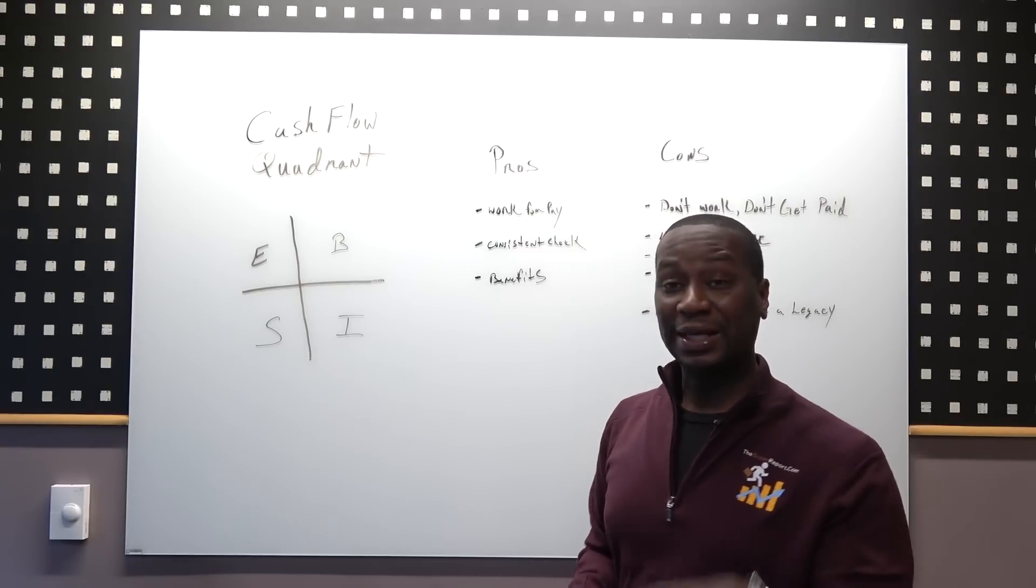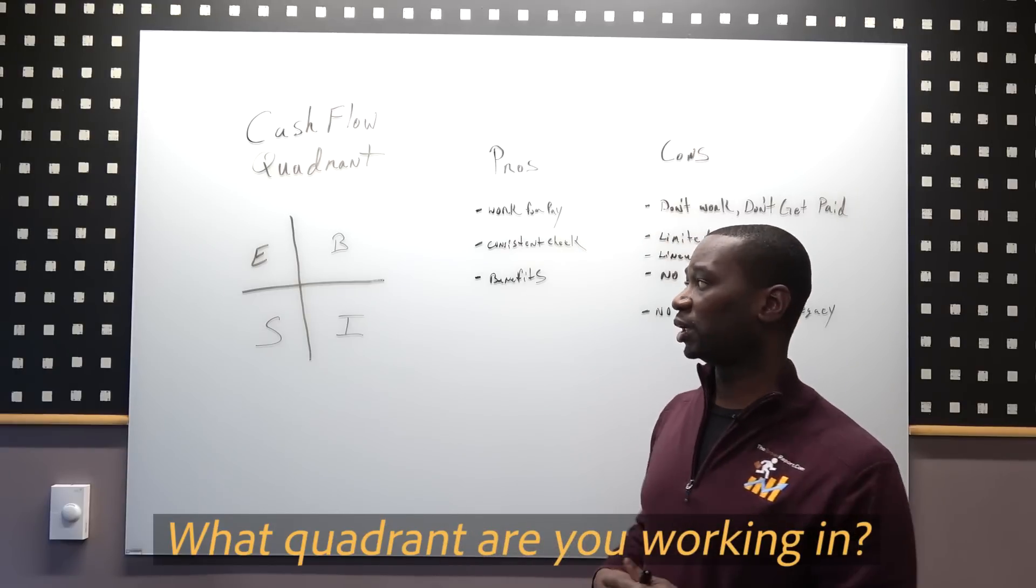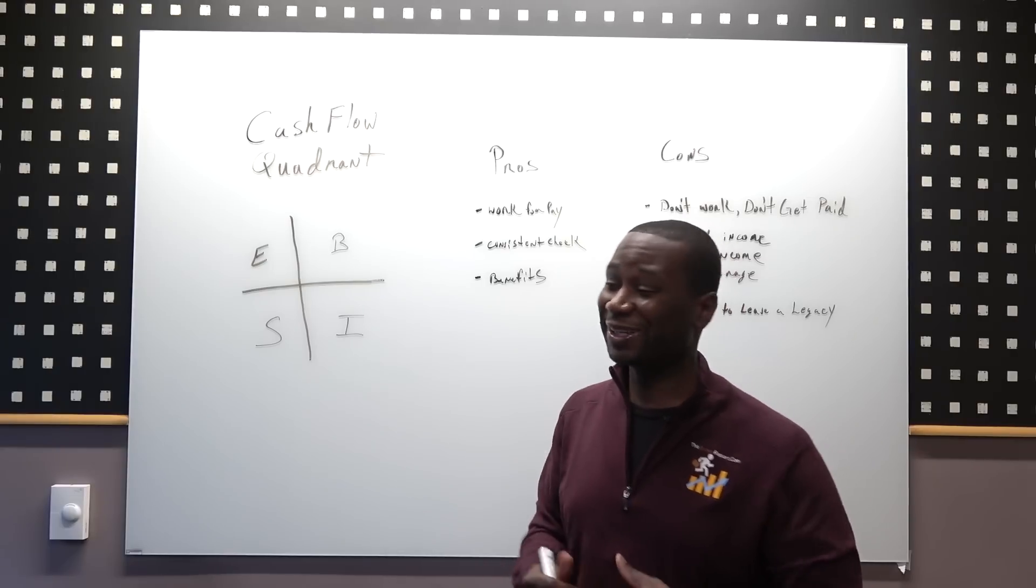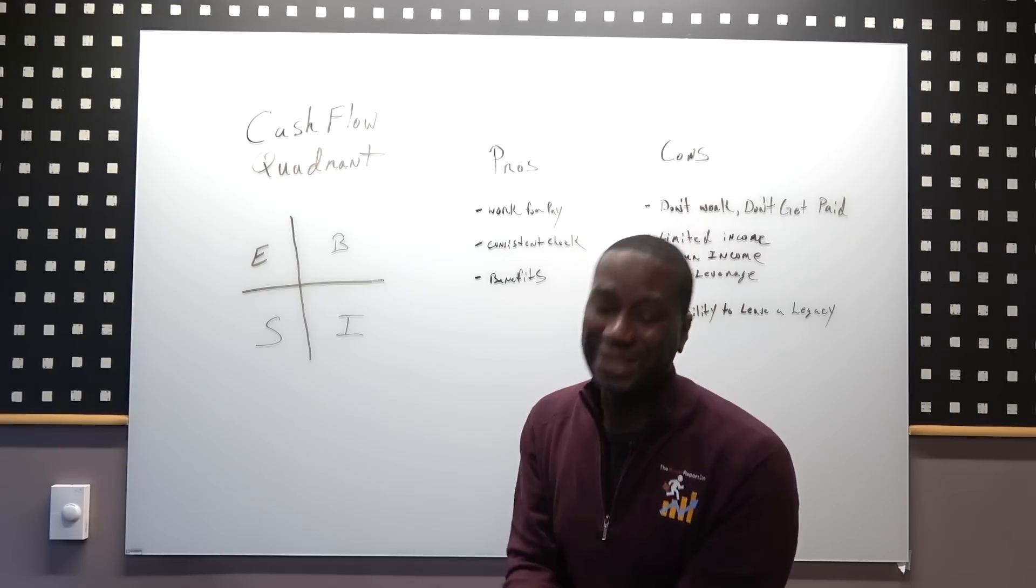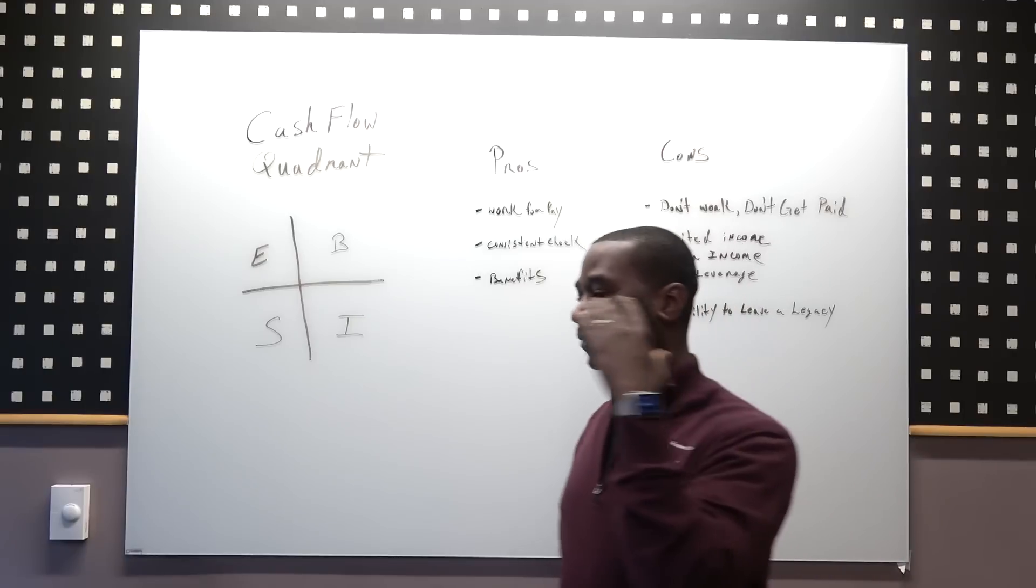Let's talk about the E quadrant. This is where most people build their house, where most people plant their flag, but I don't think they're really analyzing what they're planting their flag on.